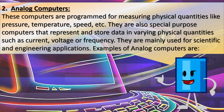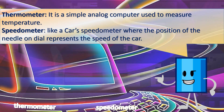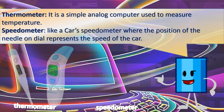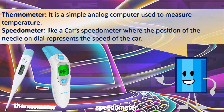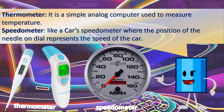2. Analog Computers. They are mainly used for scientific and engineering applications. Examples of analog computers include the thermometer — a simple analog computer used to measure temperature — and the speedometer, like a car speedometer where the position of the needle on the dial represents the speed of the car.